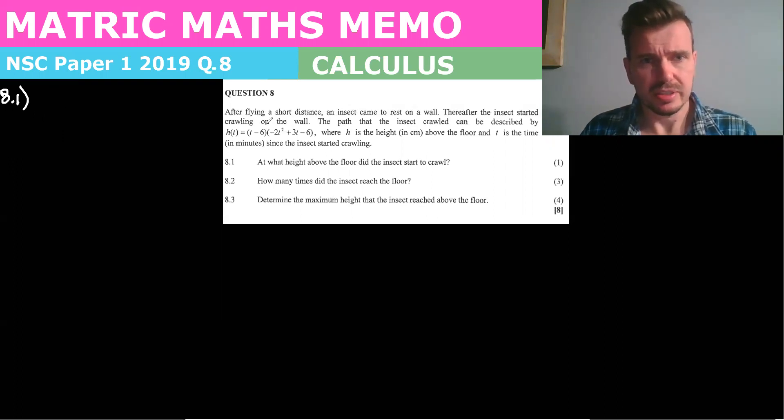Now, this says after a short distance, an insect came to rest on a wall. Thereafter the insect started crawling on the wall. The path that the insect crawled can be described by the function h(t) equals et cetera, where h is the height above the floor and t is the time in minutes since the insect started crawling. So the first question says, at what height above the floor did the insect start to crawl?